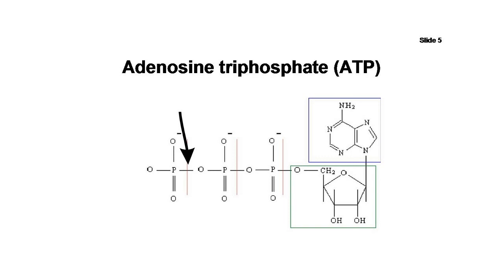In particular, it is the high energy bond between the second and third phosphate groups, marked by the arrow in the diagram, which is most often hydrolyzed to release energy.